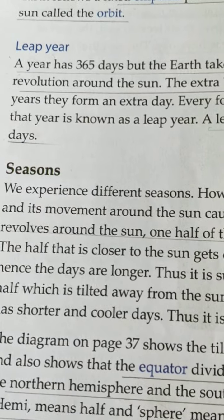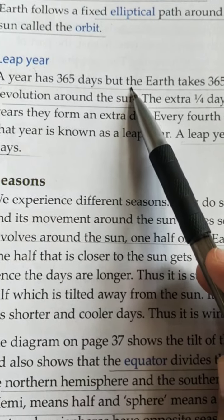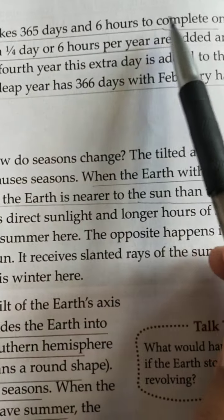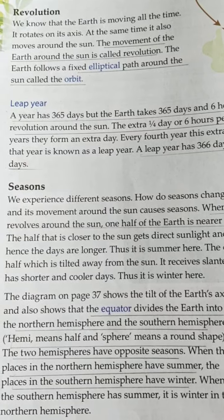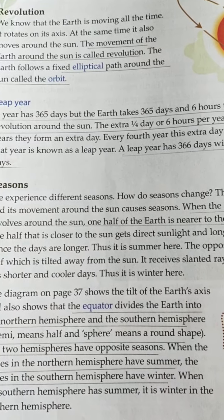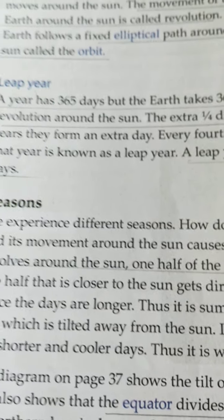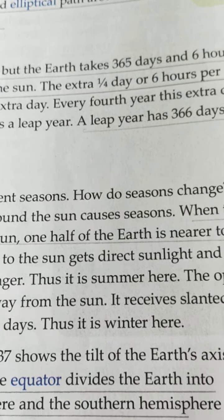Leap year — every time we hear that after four years a leap year comes, when one day is added to the month of February. A year has 365 days, but the earth takes 365 days and six hours to complete one revolution around the sun. The extra one-fourth day, or six hours per year, is added up over four years to form an extra day. Every fourth year this extra day is added to the year, and that year is known as a leap year.